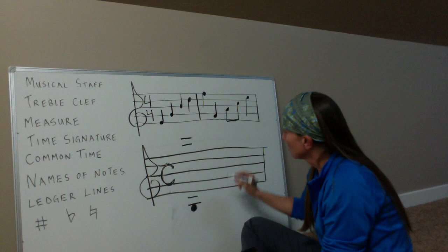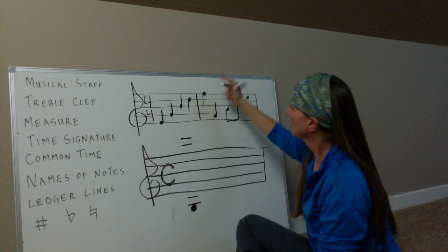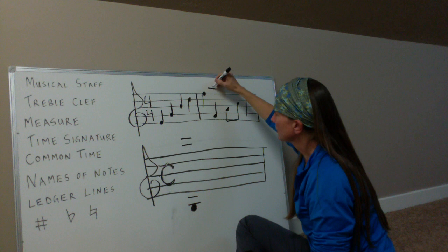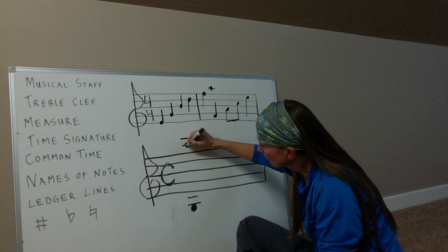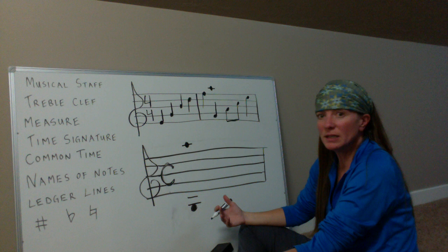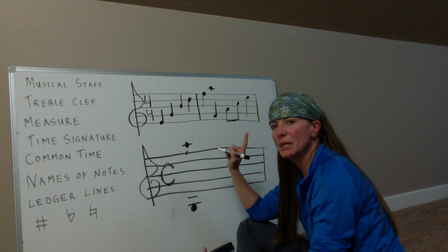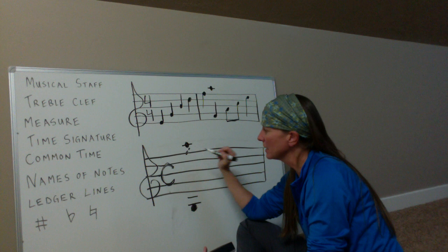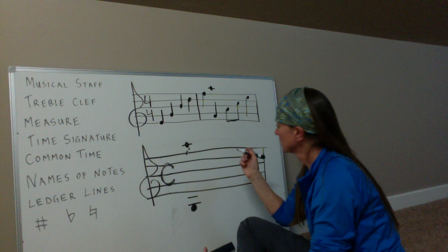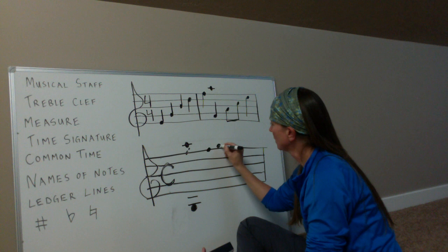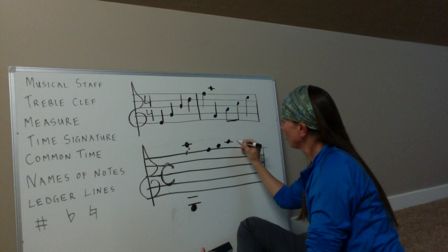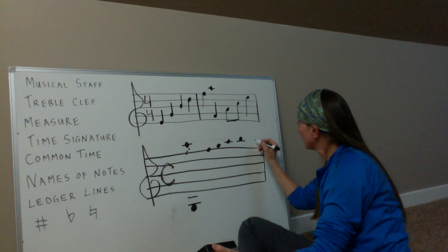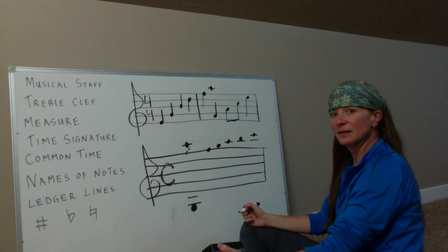When you run out of space going up — we have every good boy does fine — and you want to play a note higher, you just continue up the alphabet using ledger lines. For example, starting from F on the top line: G on the space, A on the next ledger line, B on the space above that, C on the next ledger line, and you can keep going higher and higher.